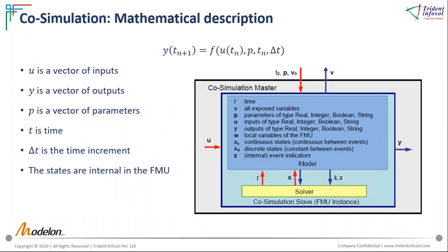The Co-simulation FMU is mathematically modeled as a function of vectors of inputs, parameters, simulation time, and time steps. In the diagram we can see the solver is enclosed with the model. Information flowing into the FMU consists only of inputs and initialization values; information flowing out consists of outputs as calculated variables. In the Co-simulation FMU, the states are handled internally.